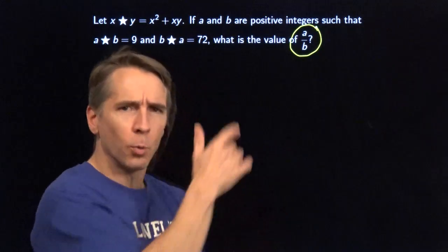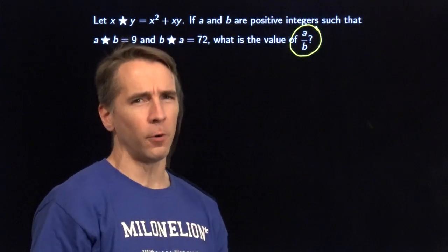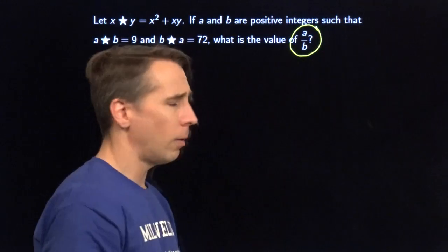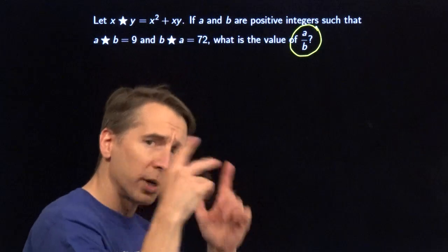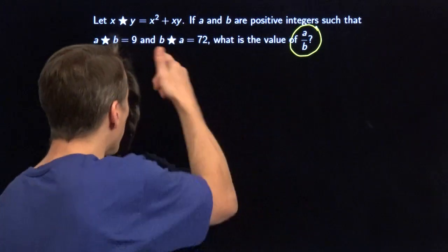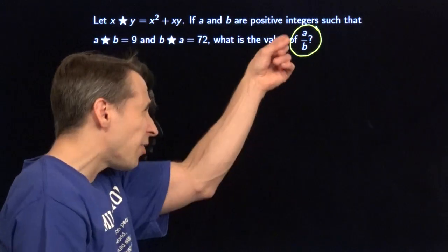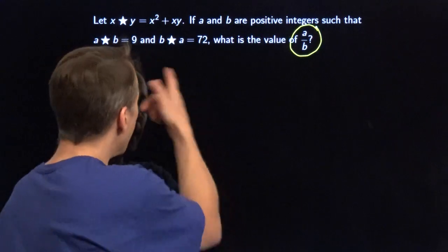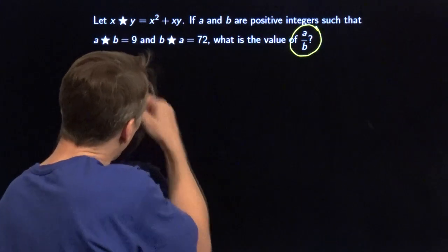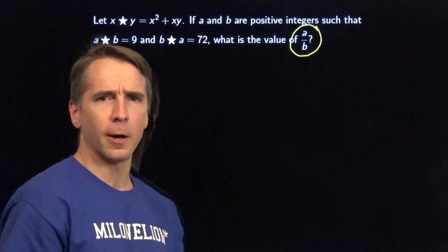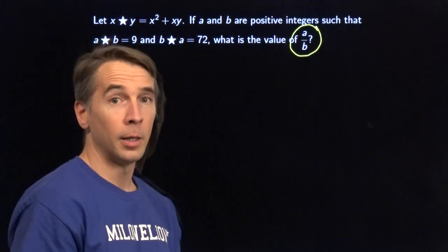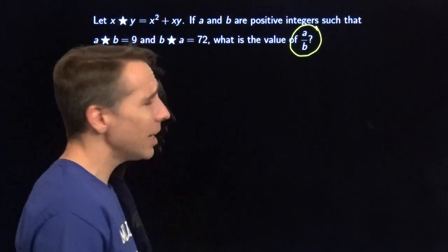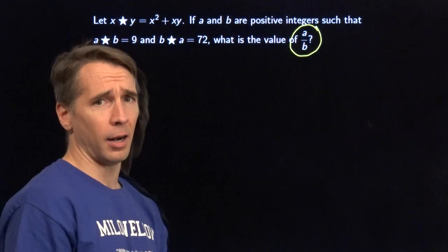Anytime I've got something weird that I'm looking for, I keep my eye on the ball. We're going to keep our eye on the ball and get to work here. We have to find stuff about a and b, and all we have are these weird equations with stars in them. But we know how to handle those stars — they tell us how to handle them right up there.